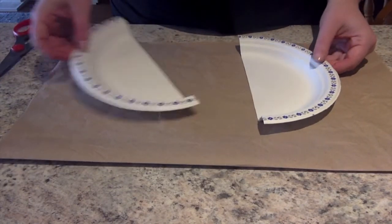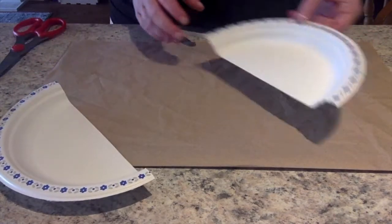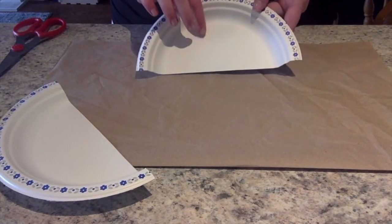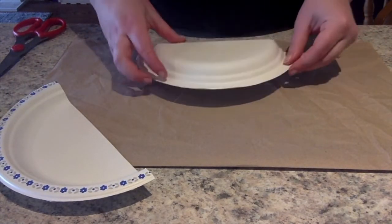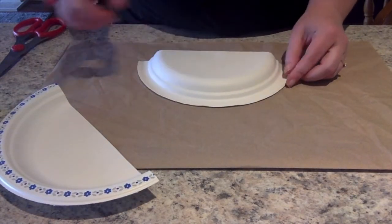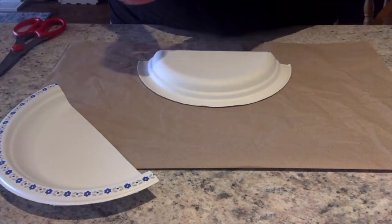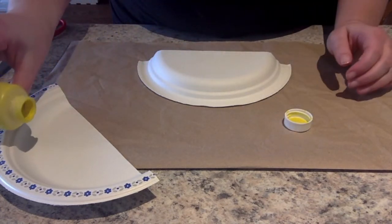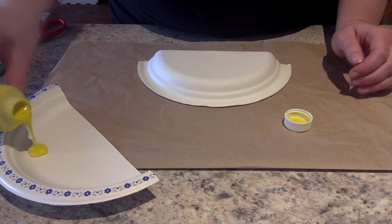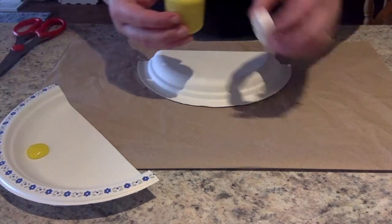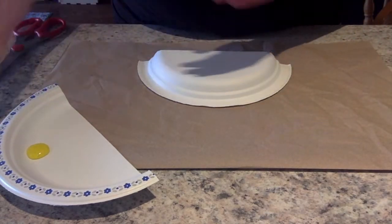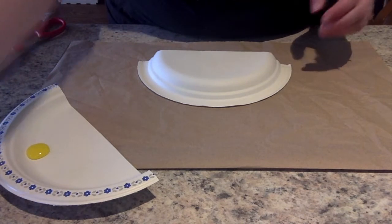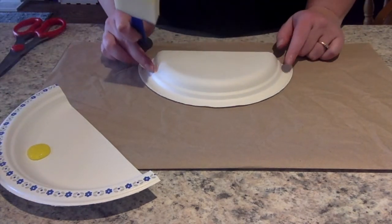When you've done that you're going to leave half of it off to the side and the part that you would usually eat dinner off of you're going to flip so that it's facing down. We're then going to take our yellow paint and pour some of that onto the other half of our paper plate. Grab our paint brush and we're going to paint our sunshine.